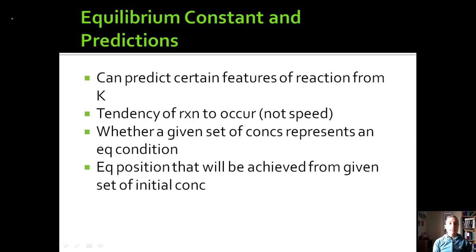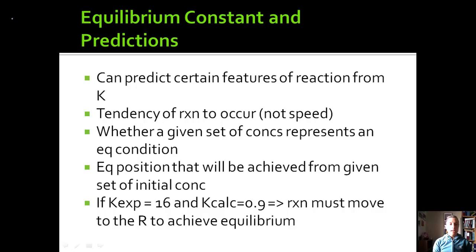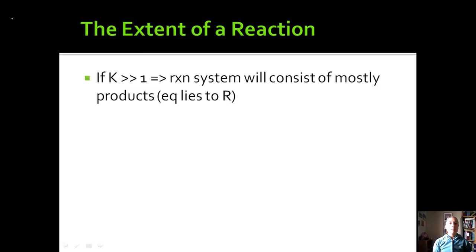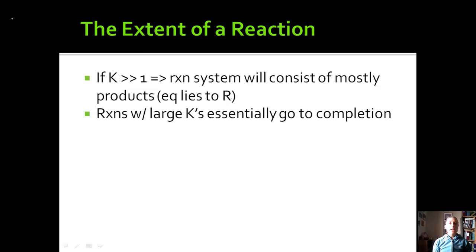For example, if we have an experimental K of 16 and we calculate the K value to be 0.9, this means that the reaction must move to the right in order to achieve equilibrium. If K is much larger than 1, the reaction system will consist of mostly products — we say the equilibrium lies to the right. Reactions with large K values essentially go to completion because most of the products are going to be produced.